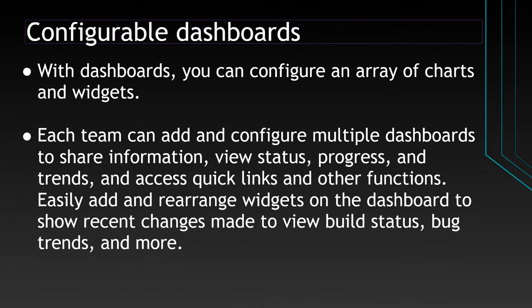Examples of in-context reports include team velocity, sprint burn down charts, cumulative flow diagrams, and test failure reports. These are generated by the system and you can generate these charts in your dashboard. These reports are displayed on the analytics tab for a specific service and derive data from analytics. Now let's walk through the actual Azure DevOps application. First, what is configurable dashboards? With dashboards you can configure an array of charts and widgets — you can add multiple charts and widgets in a given dashboard.